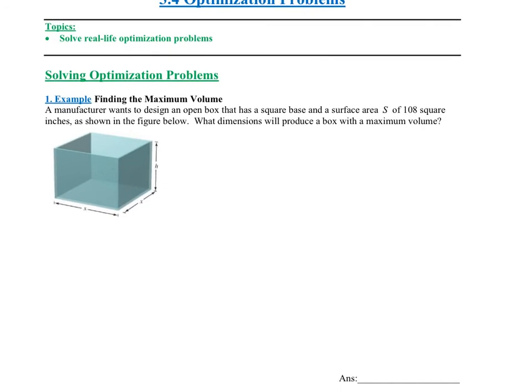The first problem says: a manufacturer wants to design an open box that has a square base and a surface area S of 108 square inches, as shown in the figure below. What dimensions will produce a box with the maximum volume? It seems that we're dealing with two separate equations: the first one would be surface area, and the second one would be volume.